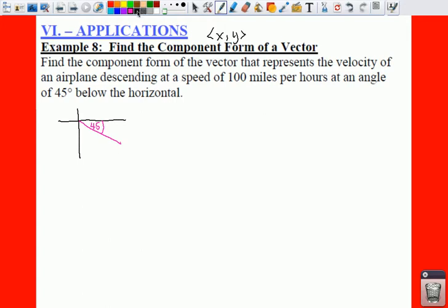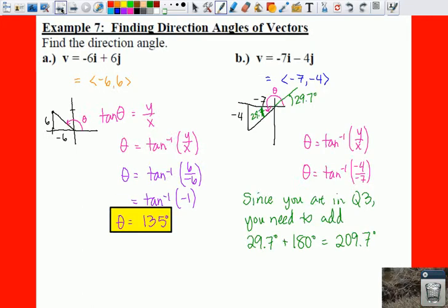This would be 45 degrees below the horizontal. Now, it is also traveling at a speed of 100 miles per hour. So, kind of slow, really. We need to find your component form.